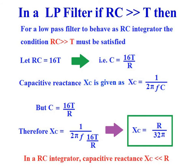In a low-pass filter, if RC is much greater than T, then the low-pass filter behaves as an integrator. Let RC be equal to 16T.